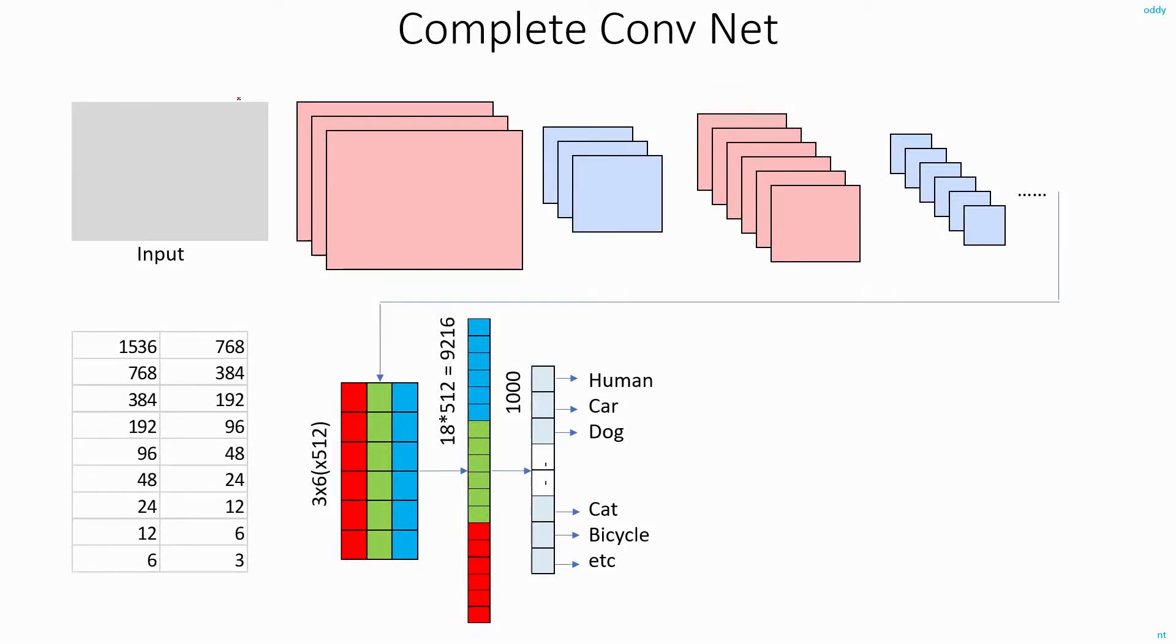Now, putting all the pieces together, this is how your complete neural network would look like. You take an image, you do the convolution - that is you cascade multiple conv-pool layers. And finally, whatever feature map you get, you just expand it and convert it to a one-dimensional vector.